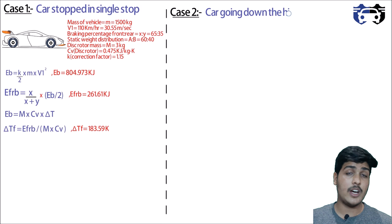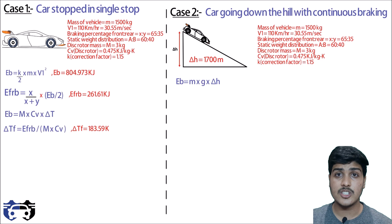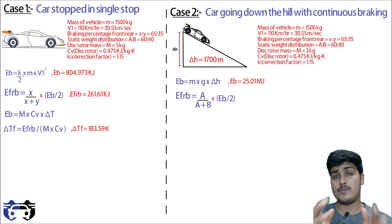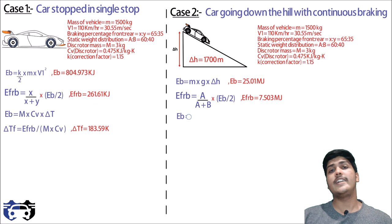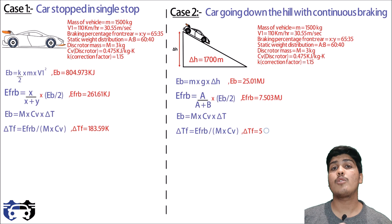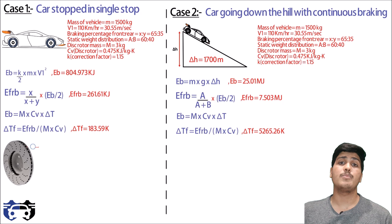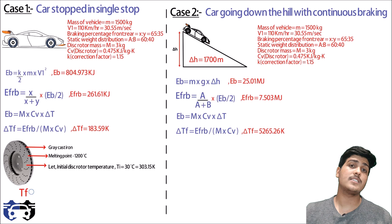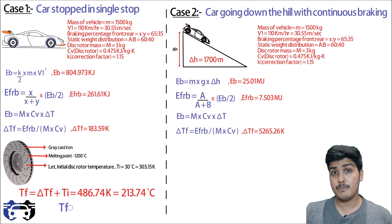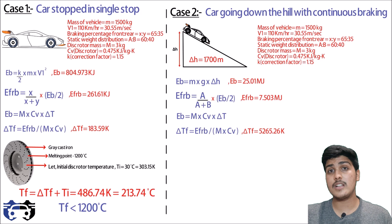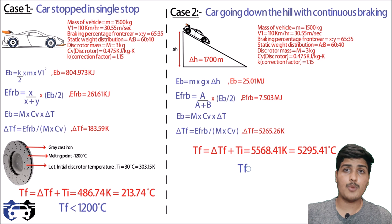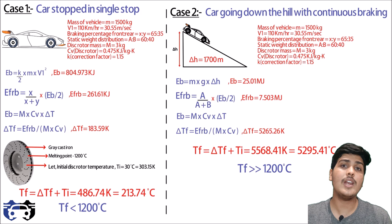For Case 2, the car goes down the hill with continuous braking. The braking energy eb equals m·g·delta-h gives eb equals 25.01 megajoules. The front rotor energy is efrb equals (a/(a+b))·(eb/2), giving efrb equals 7.503 megajoules. Then delta-Tf equals efrb/(m·cv), giving delta-Tf equals 5265 Kelvin. With the disc rotor made of gray cast iron with a melting point of 1200°C and an initial temperature of 30°C, Case 1 gives a final temperature of 213.74°C — well within safe limits — but Case 2 gives 5295.41°C, which would completely melt the rotor.